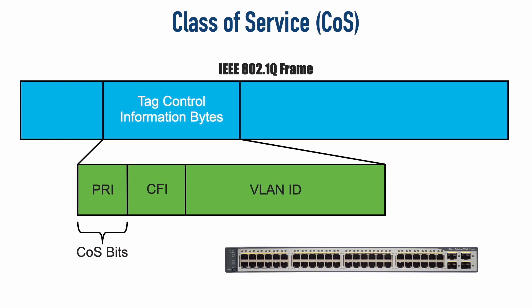However, Cisco says do not use six or seven — those are reserved for network use. So we're limited to only using values of zero through five for production traffic. And since five is the highest we can use for production traffic, that's what our voice frames should be marked with. In fact, Cisco IP phones by default will mark voice frames with a class of service value of five.